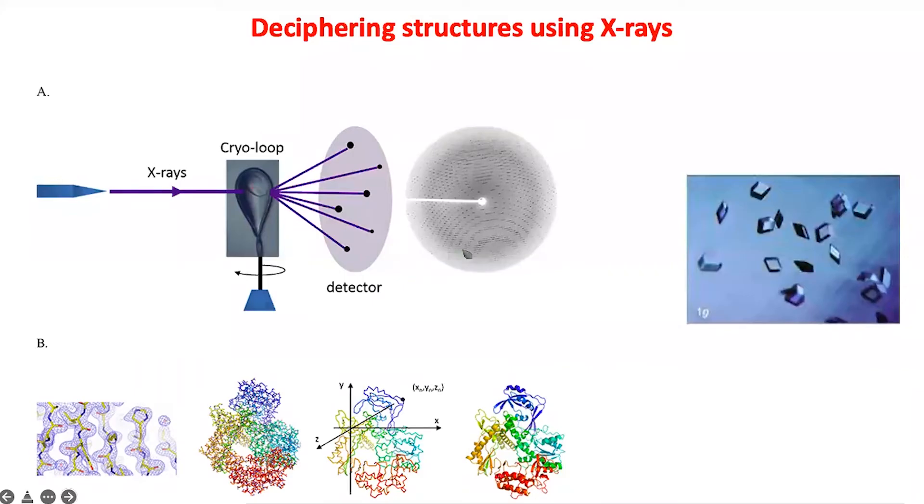Then all these images are collated, the intensities of each spot are measured, and the patterns you see over here are based on the symmetry of what is called a unit cell inside the crystal. So these are all very complicated concepts.